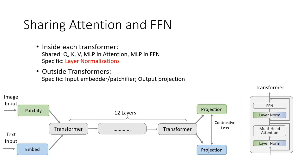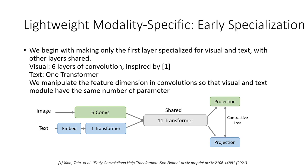First, we found that sharing all parameters inside the transformer — including attention and feed-forward neural networks — except for layer normalization, gives comparable performance to a totally modality-specific transformer. Second, we found that early specialization is an efficient and effective modality-specific component. In our case, we begin by making only the first layer specialized for visual and text, with other layers shared.